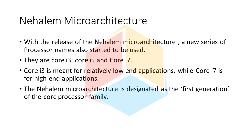With the release of the Nehalem micro-architecture, a new series of processor names also started to be used: Core i3, Core i5, and Core i7. Core i3 is meant for relatively low-end applications, while Core i7 is for high-end applications. The Nehalem micro-architecture is designated as the first generation of the core processor family.